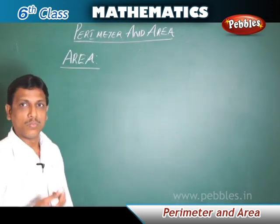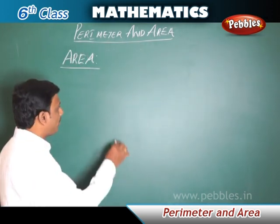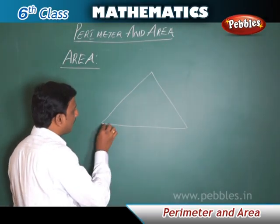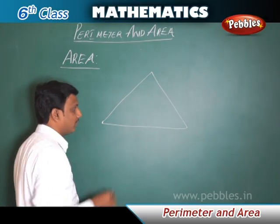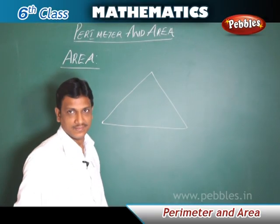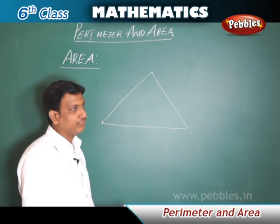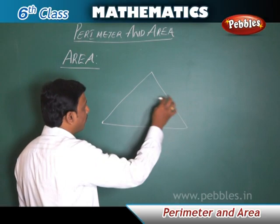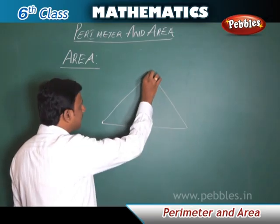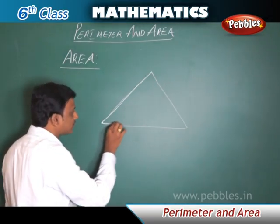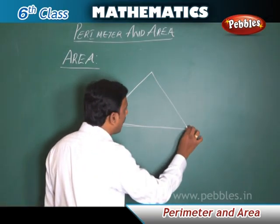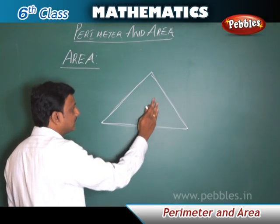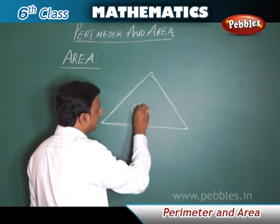Area. The amount of surface occupied by a closed figure is known as area. This closed figure occupied some surface on the board — that surface is called the area.